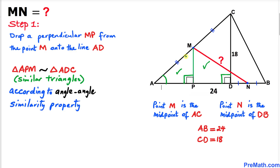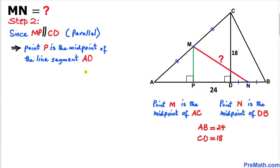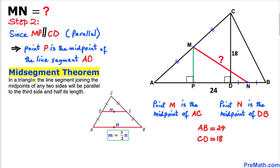Angle A is in common. Next, we can see that line segment MP and line segment CD are parallel, since they each form a 90-degree angle. Therefore we conclude that point P is the midpoint of line segment AD, according to the mid-segment theorem.